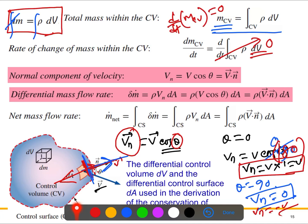To simplify, we can use the dot product formulation: the normal velocity component Vn and the differential mass flow rate can be expressed using this formula. For the net mass flow rate through the entire control surface, we integrate over the whole system. We'll use this understanding when solving problems in tutorials, which will give much better clarity.